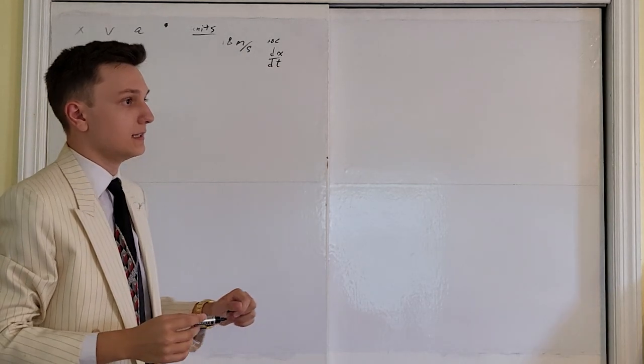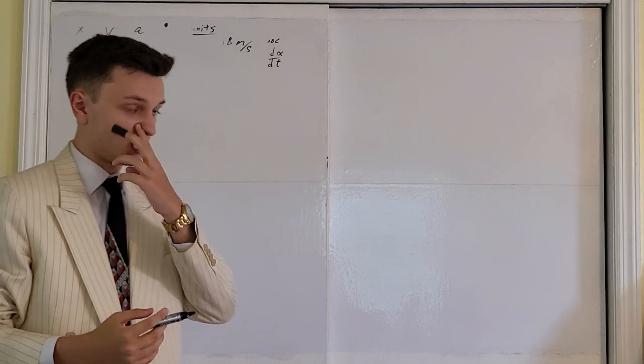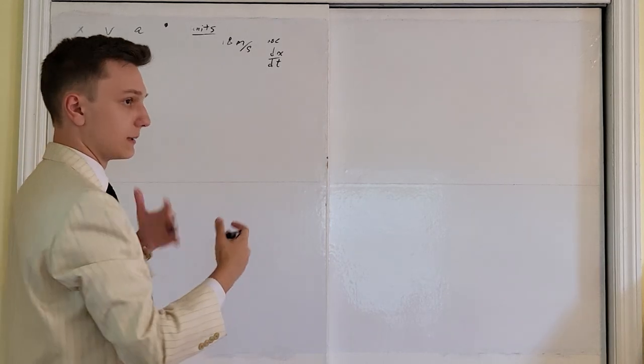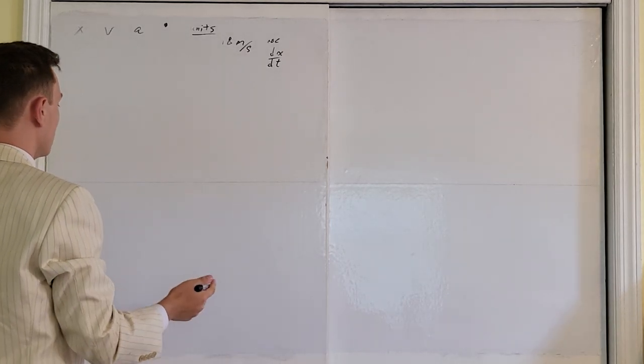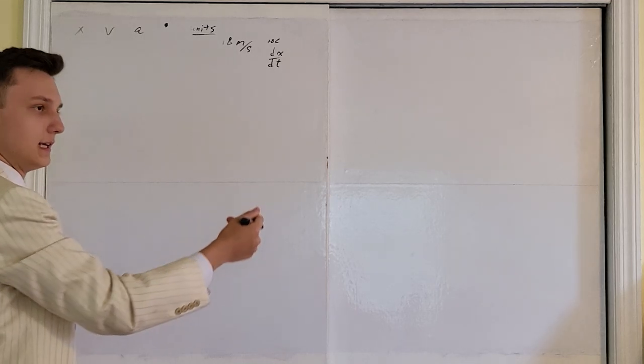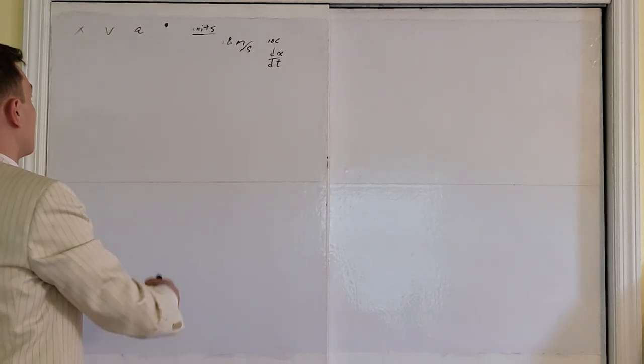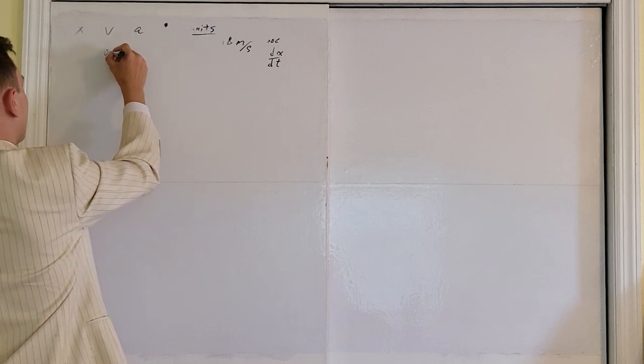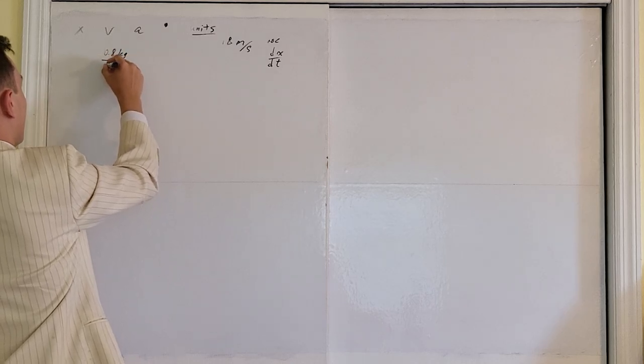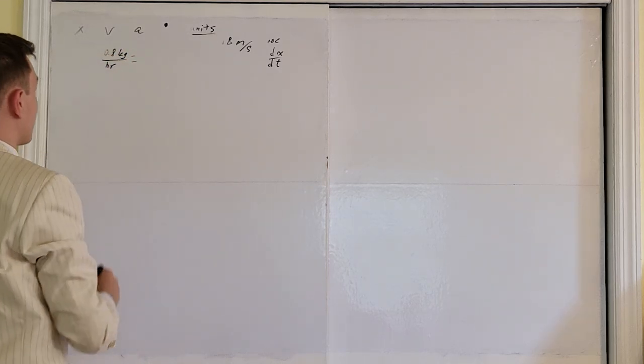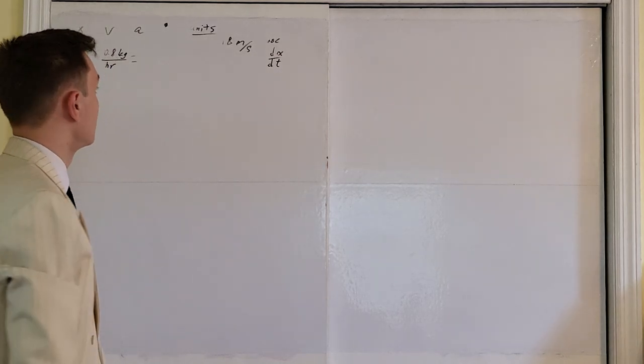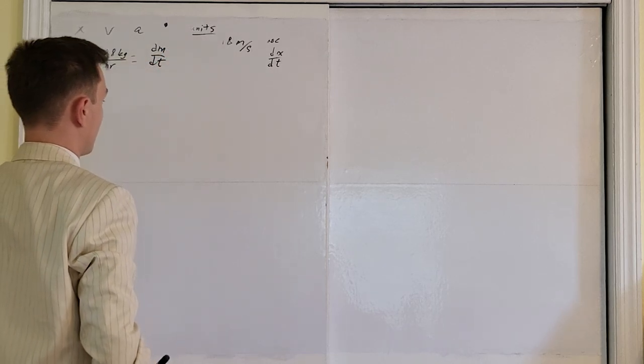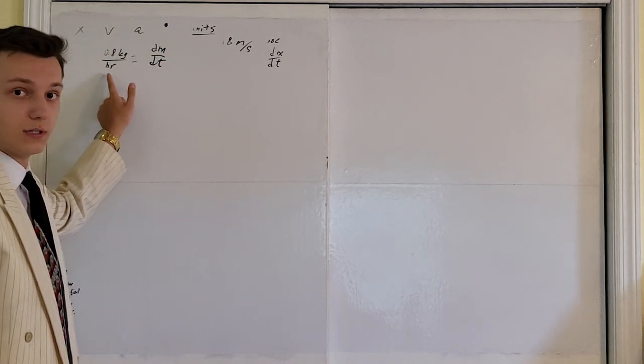The importance of that is we will be exploring rates of change and derivatives that you probably haven't seen before. First of all, a problem that stumped a lot of the kids in my class was a problem in which you were given some honey being added to a surface. And in the problem, you were given honey being added to a surface at, let's say, 0.8 kilograms per hour. So this you should immediately look at and say, oh, that's a rate of change. That is a derivative of mass with respect to time. Whenever you see a division bar in your units, it's a derivative.